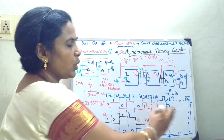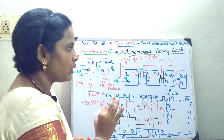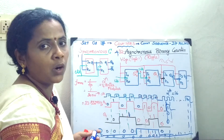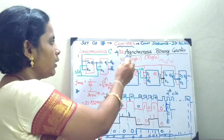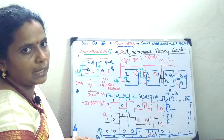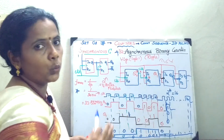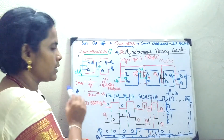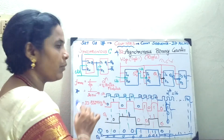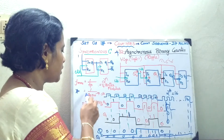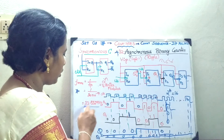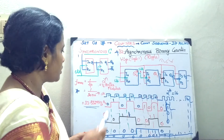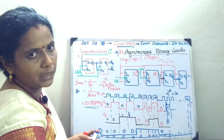Now I am going to convert this to a mod-10 counter. Before that, in asynchronous or ripple counters there exists a propagation delay. For example, in a 3-bit counter with a delay of 10 nanoseconds per flip-flop, the total delay is 10 + 10 + 10 = 30 nanoseconds. In that case, the clock frequency of the entire circuit should be 33.33 megahertz. This is the way to calculate your propagation delay.